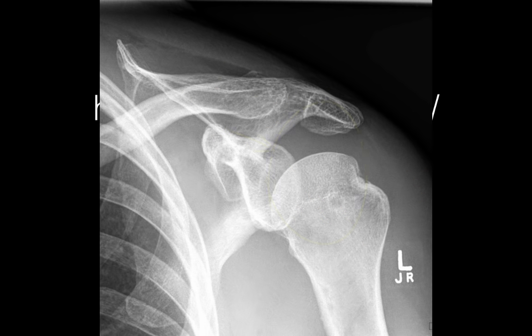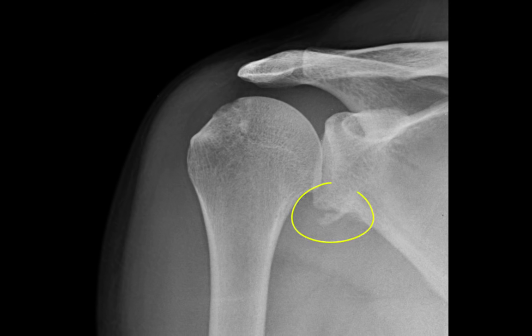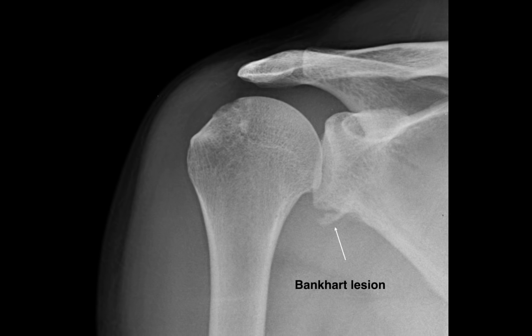Here's a dislocated shoulder that's been reduced, so the humeral head is back in the glenoid fossa, but there's a bony lesion. This little divot in the posterior lateral aspect of the humeral head is known as a Hill-Sachs deformity — a compression fracture sustained as the humeral head pops out of the shoulder joint. Another type of bony lesion is called a Bankart lesion, where there's an avulsion of a bony fragment from the glenoid fossa. Both a Hill-Sachs deformity and a Bankart lesion have prognostic implications, so it's really important to look for them after a dislocation has been reduced.